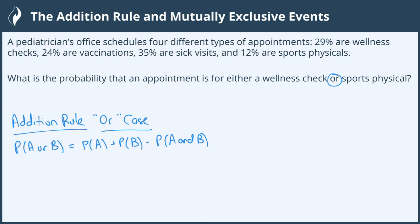What happens if A and B cannot happen at the same time? We call these mutually exclusive events. Students sometimes confuse this concept, so be careful. Mutually exclusive — they're separated, they cannot happen at the same time. That's a way that helps me memorize it.